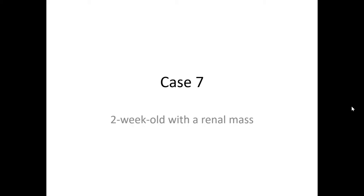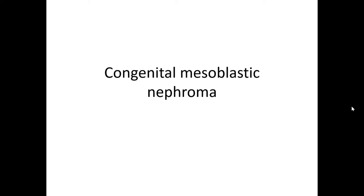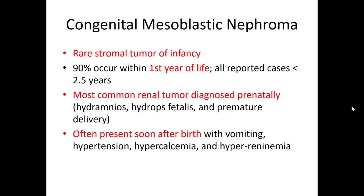The combination of the patient's age — being only two weeks old — and the morphology that we just saw is most in keeping with a congenital mesoblastic nephroma. Congenital mesoblastic nephroma is relatively rare. It's a stromal or mesenchymal tumor, and the vast majority occur within the first year of life. They are the most common renal tumor diagnosed prenatally, and the term congenital would seem to suggest that it's present at birth.